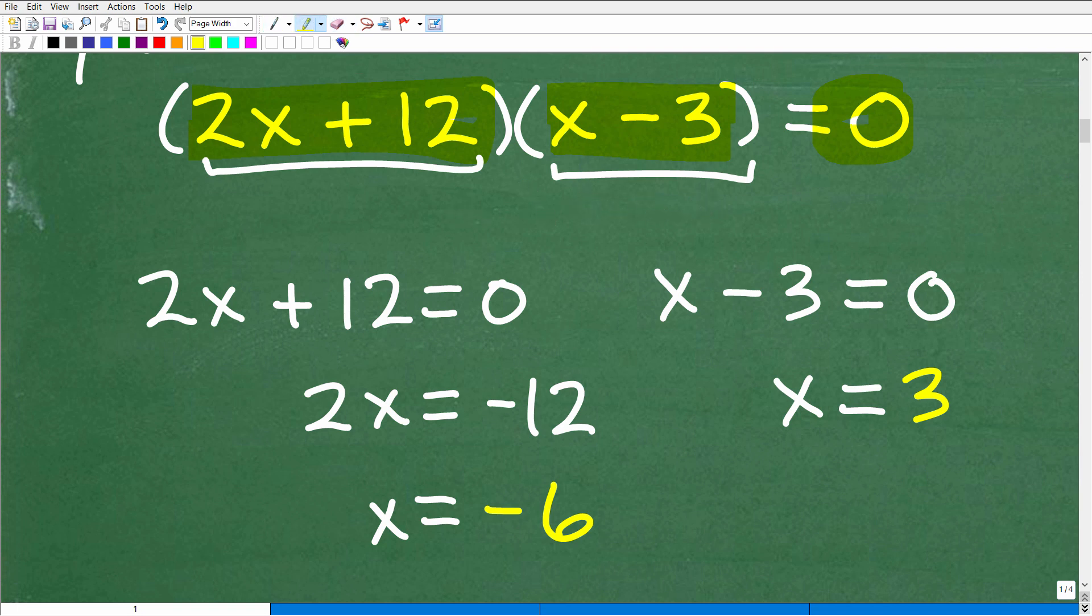This is a very important property in algebra. It's called the zero product property. And we love to use it because it makes solving these equations super easy. This times this is equal to zero. That means this and or this is in fact themselves equal to zero. So what we need to do is set each one of these linear factors. That's what we refer to these as. We're going to set these equal to zero and solve for x.